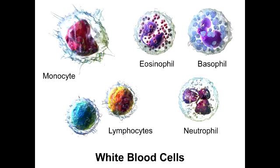What is a characteristic feature of neutrophils' nucleus? A characteristic feature of neutrophils is that it has a multi-lobe nucleus, which ranges from 2 to 5 lobes.